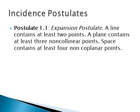The first is called the expansion postulate: a line contains at least two points; a plane contains at least three non-collinear points; and space contains at least four non-coplanar points. If you only have two points, they are definitely on a line — though those two points could also be on two different planes. A plane must have three non-collinear points so you can draw more than one line, since a plane has infinitely many lines. Space needs at least four points, requiring at least a third line, giving you a 3D figure.